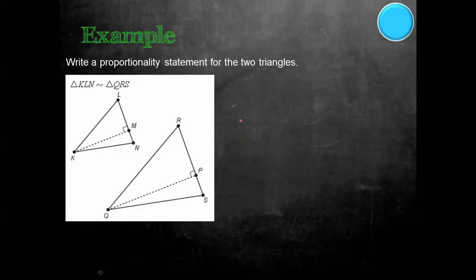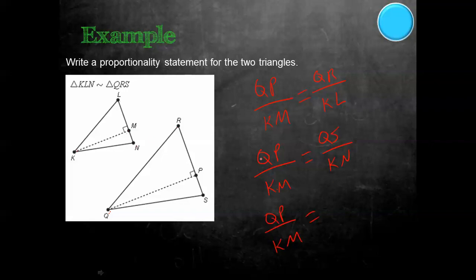Here we're going to write a proportionality statement for these two similar triangles. We have an altitude because it goes from the vertex and makes a right angle. Using the proportional altitude theorem, we say QP over KM equals a corresponding side. So we can write QP over KM equals QR over KL, or QP over KM equals QS over KN, or SR over NL. We have to use the altitude every time, then pick a corresponding side.